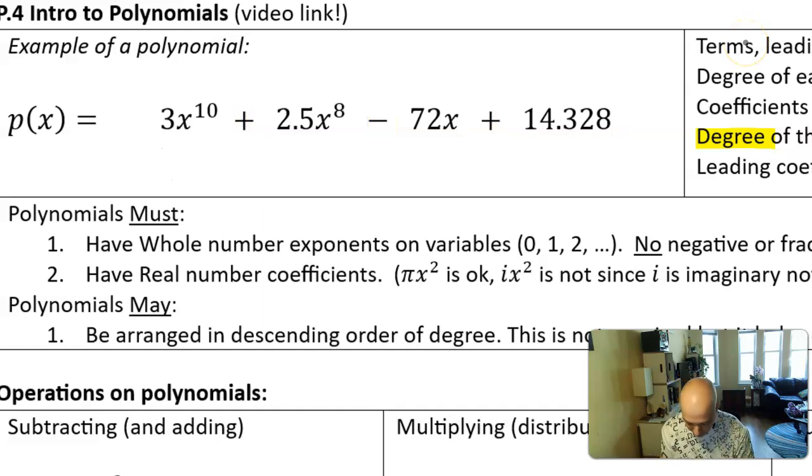The term of the polynomial that has the highest exponent of x is called the leading term. It's usually written in front, but it doesn't have to be, but in its convention we write the leading term in front because it has the highest exponent.